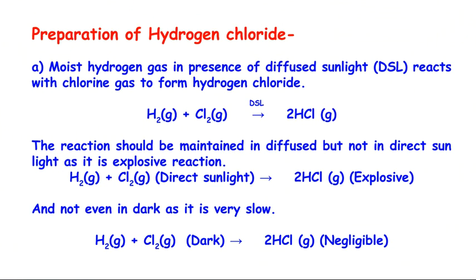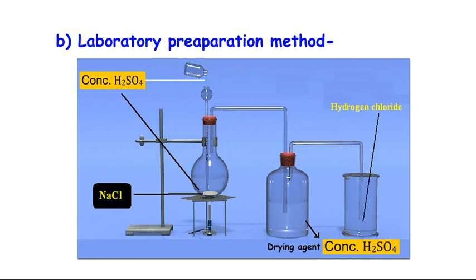Hydrogen chloride gas is mainly prepared in two pathways. The first is direct combination, where moist hydrogen is reacted with chlorine in the presence of diffused sunlight, as shown in the reaction below. The reaction must be maintained in diffused sunlight because in direct sunlight it may be explosive. In dark conditions, the reaction will be very slow and the production of HCl gas will be negligible.